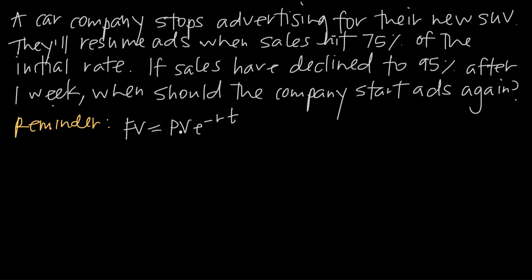So we're going to say present value is current sales, future value is sales after a certain amount of time t. We're interested in the point at which sales have declined to 75% of their initial rate, but before we do that, we're going to have to find the decay constant r, or the rate of decay. We'll find that using the information from the second sentence: sales have declined to 95% after one week.